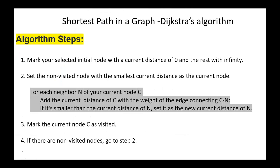The algorithm steps are as follows. Mark your selected initial node with a current distance of zero and the rest with infinity. Set the non-visited node with the smallest current distance as the current node. For each neighbor N of current node C, add the current distance of C with the weight of the edge connecting C and N. If it's smaller than the current distance of N, set it as the new current distance of N. After completing the updating or relaxation process, mark the current node C as visited. Continue this process while there are non-visited nodes.